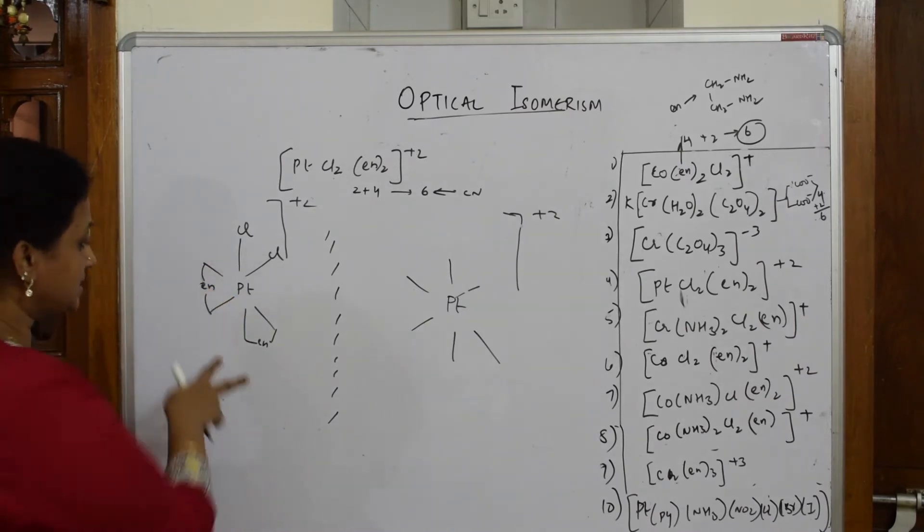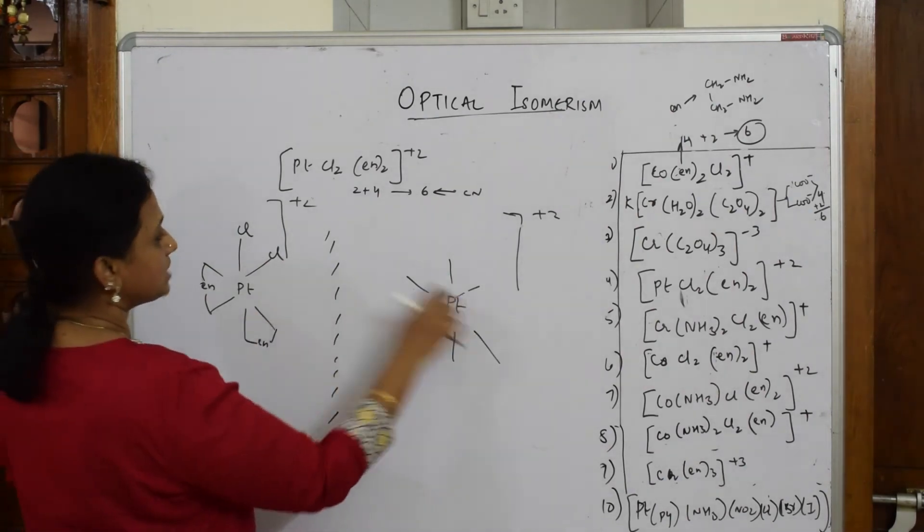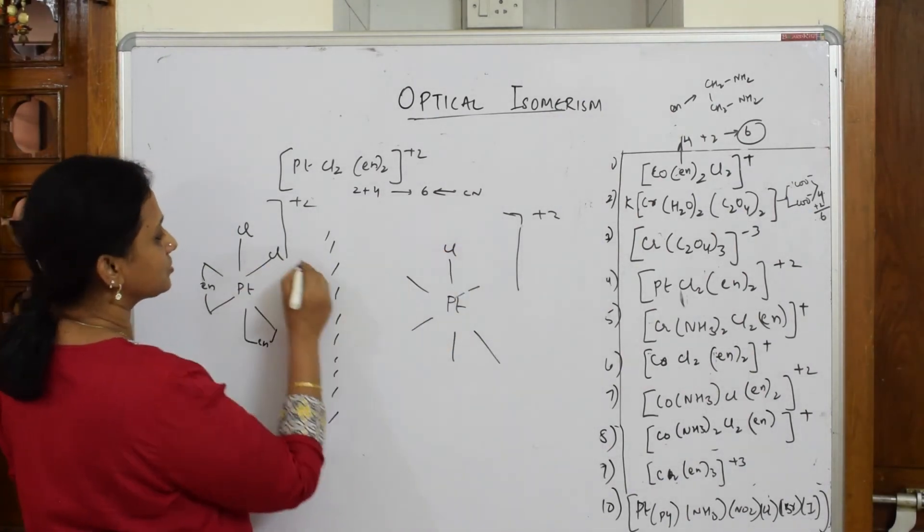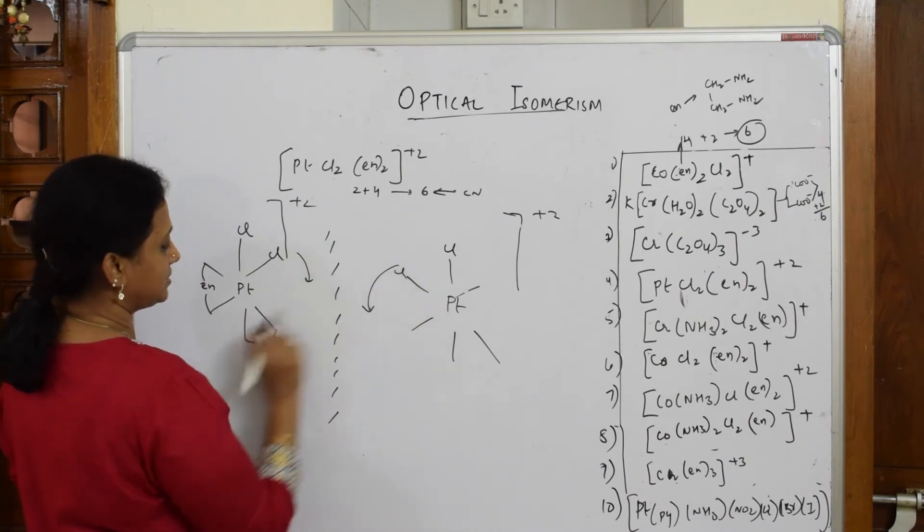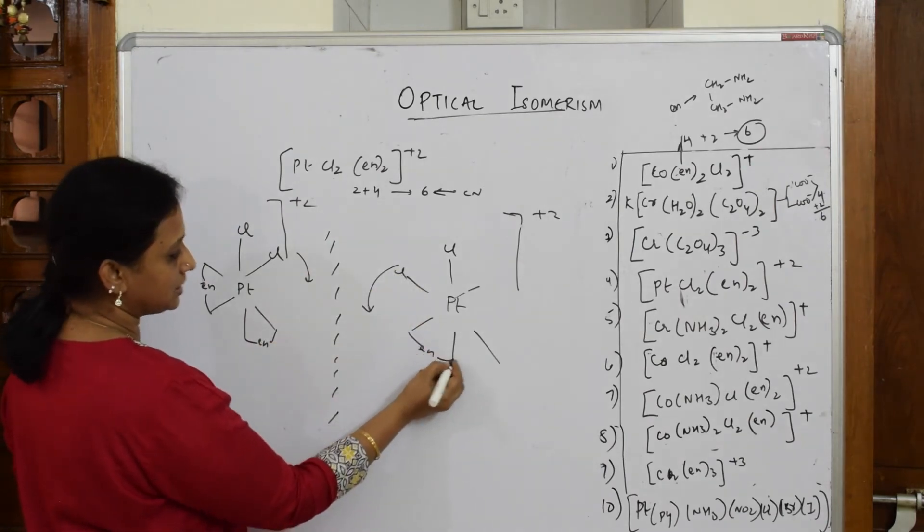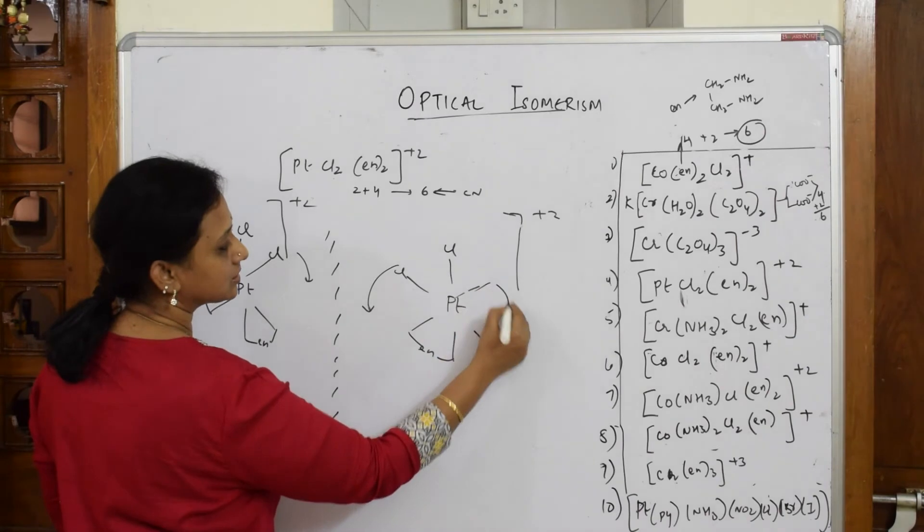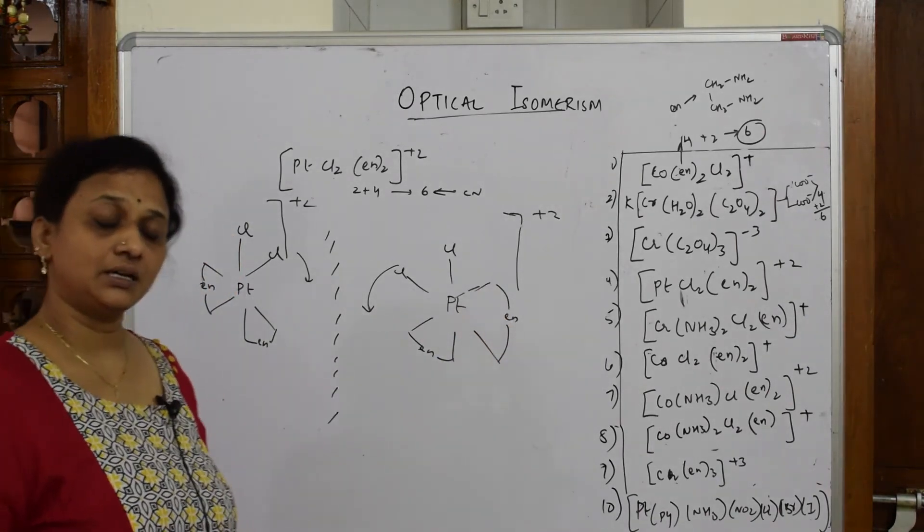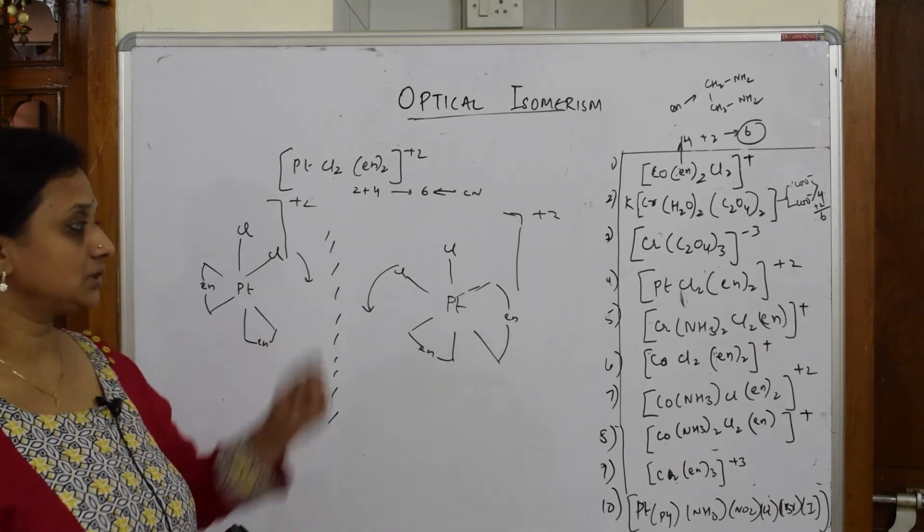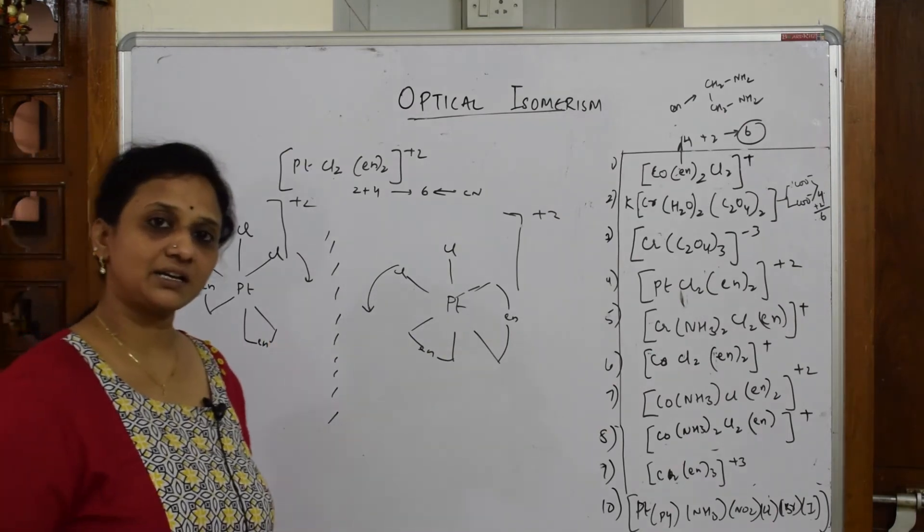The cis isomer on the same side, draw the same mirror image. Cl is here. Now this is moving in this direction, you have to move in this direction. Cl is here, en is here, ethylenediamine. The other en is here. One more, three. So this is your optical isomer of the fourth complex.